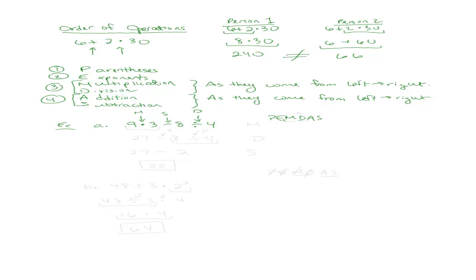Out of all these, the first that comes in PEMDAS is M and D, and we do them left to right as they appear. Multiplication comes first here, so I do that first: 9 times 3 is 27. I'm just going to do that one step and worry about the others later. Now I have a subtraction and a division remaining. According to the order of operations I have to do the division first: 8 divided by 4 gives 2. Finally the last thing left is subtraction: 27 minus 2 gives 25. That is my answer.